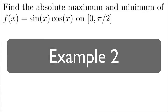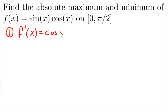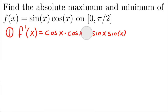Now we're finding the absolute maximum and minimum of f(x) = sin(x)cos(x) on the interval [0, π/2]. Step one is to find the critical points, so we need the first derivative. Using the product rule: the derivative of sin(x) times cos(x) plus sin(x) times the derivative of cos(x), which is -sin(x). So we get cos²(x) minus sin²(x).